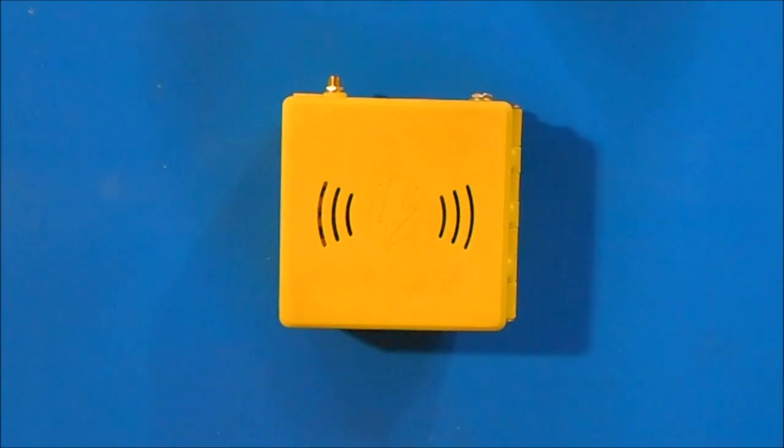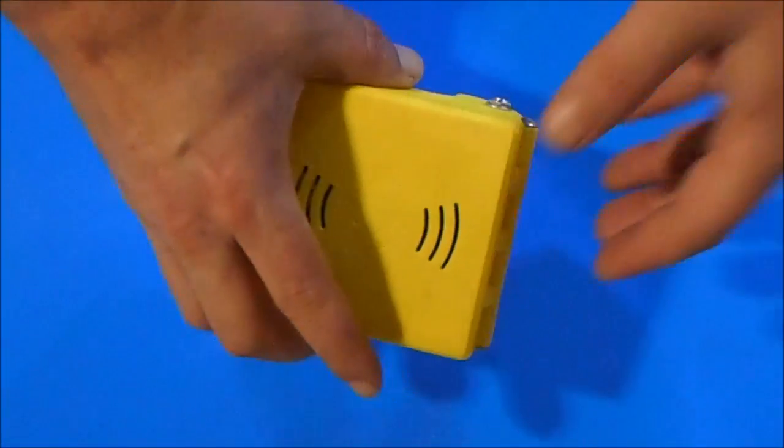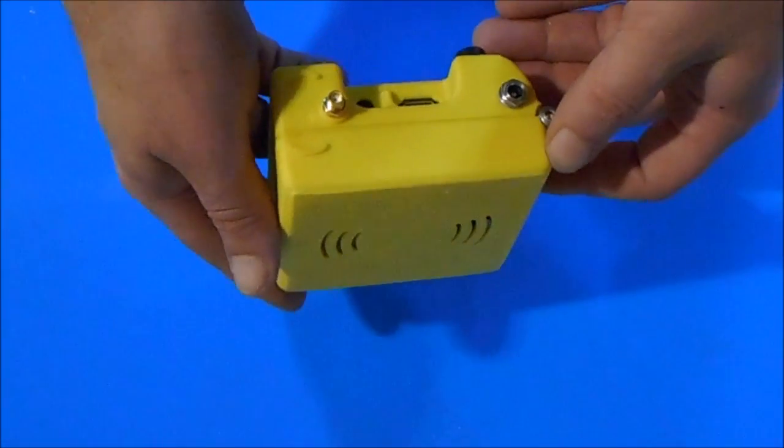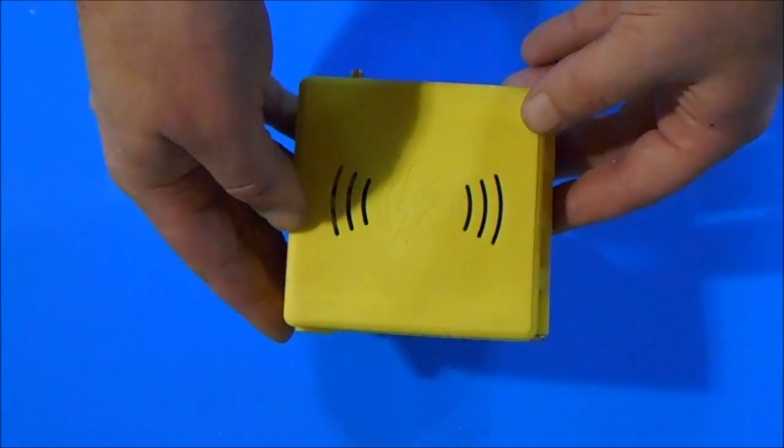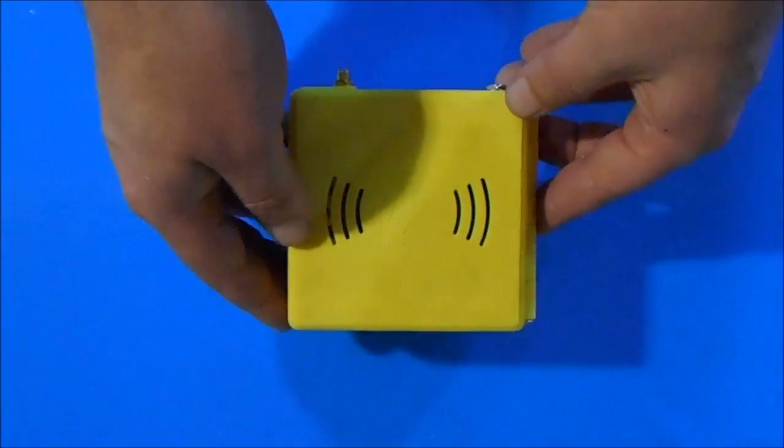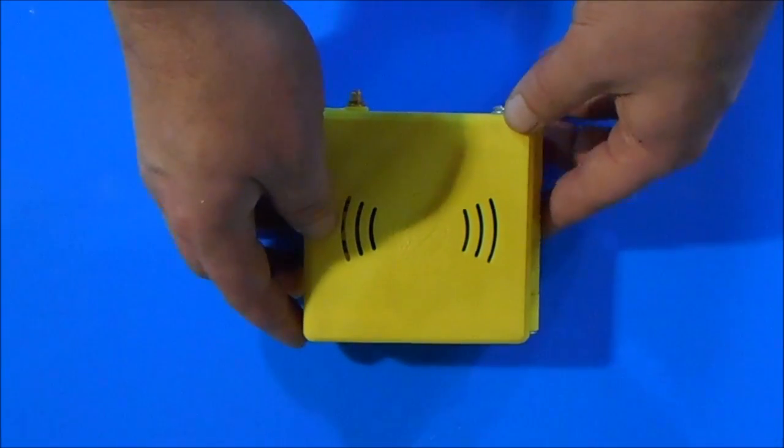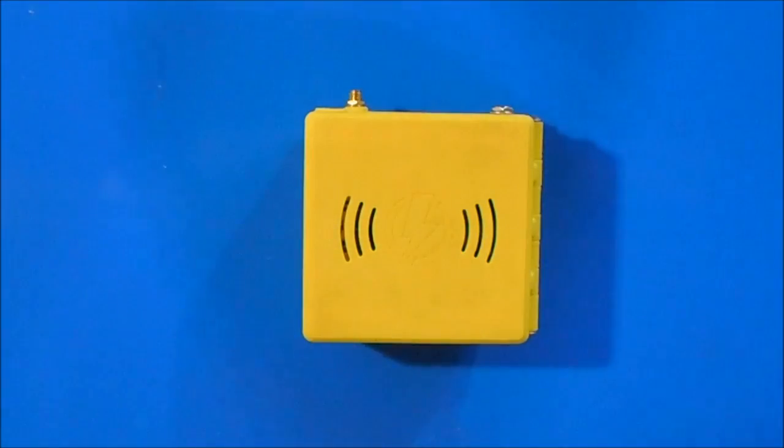This is the DHAP Mini Mega. Some of you may be familiar with the original DHAP. The DHAP is a digital ham access point. It works with the D-Star radio network. If you're interested in this, you are probably already versed in that technology.